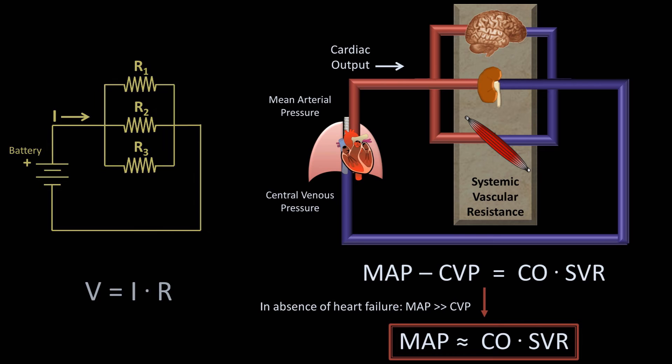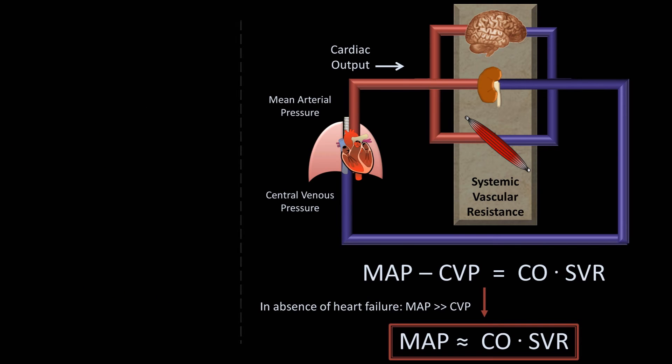The most fundamental concept it helps us to understand is the etiologies of hypotension, or low blood pressure. As we can see, if a patient is hypotensive, he or she must have either low cardiac output or low systemic vascular resistance.